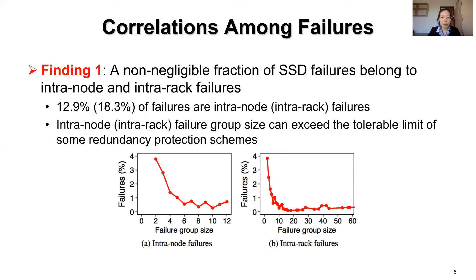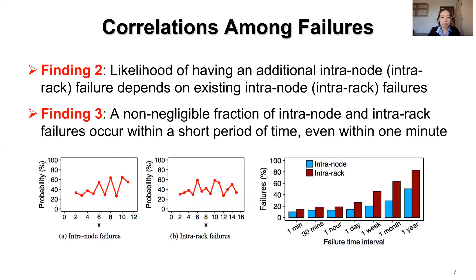We first examine the severity of correlated failures and find that a non-negligible fraction of SSD failures belong to intranode and intrarack failures. Also, the intranode or intrarack failure group size can exceed the tolerable limit of some redundancy protection schemes. From the left figures, we find that the likelihood of having an additional intranode or intrarack failure in a group depends on the already existing failures.